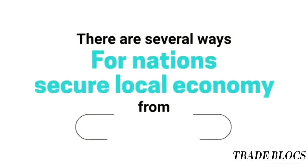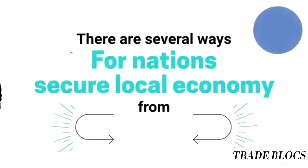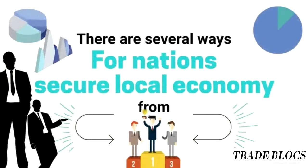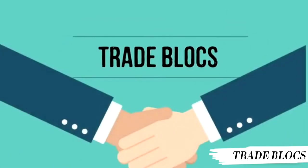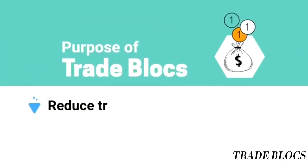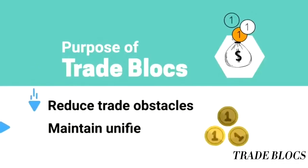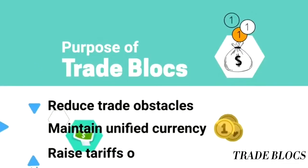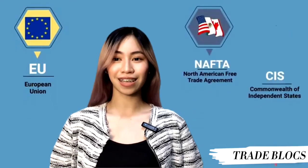There are several ways for nations to secure their local economies from foreign competition, and one of them is through trade blocs. The purpose of trade blocs could include reducing trade obstacles, maintaining a unified currency, or raising tariffs on goods purchased outside the trade bloc. In this video, we are going to talk about the three trade blocs: the EU, NAFTA, and the CIS.